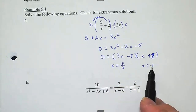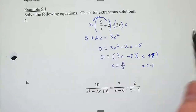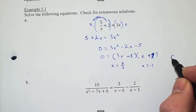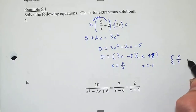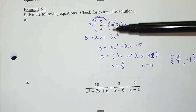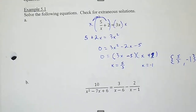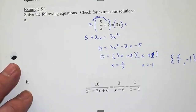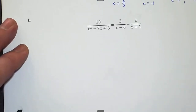Neither −1 nor 5/3 gives me a zero in the denominator of a fraction, so I'm good. These wouldn't be too difficult to check — specifically −1 is pretty easy: 5 divided by −1 plus 2 is −3, and 3 times −1 is −3, so it's fine. Let's take a look at letter B.